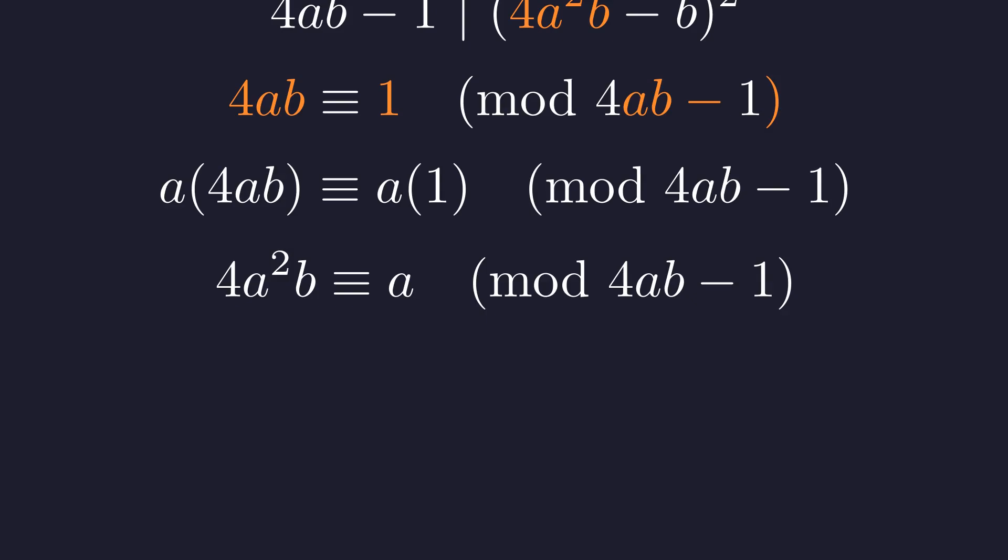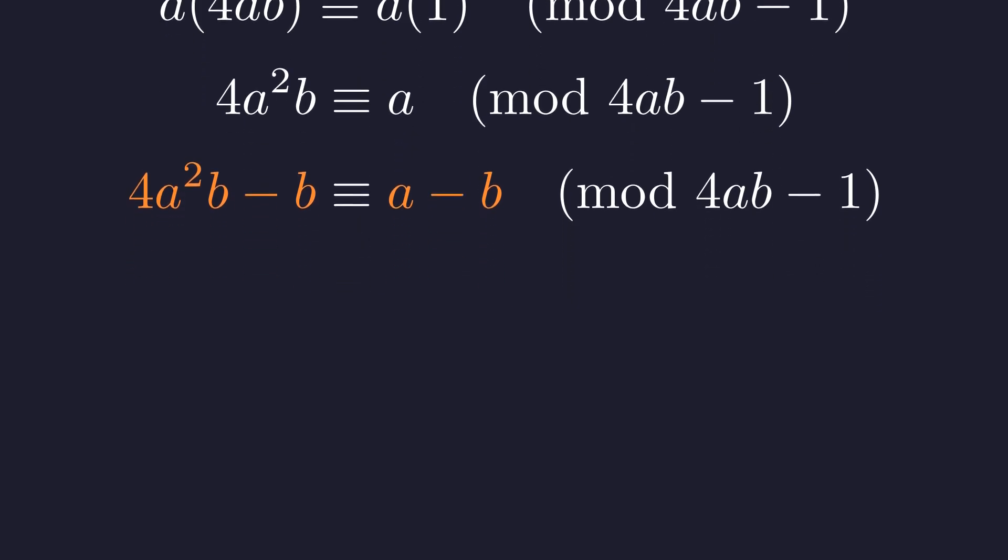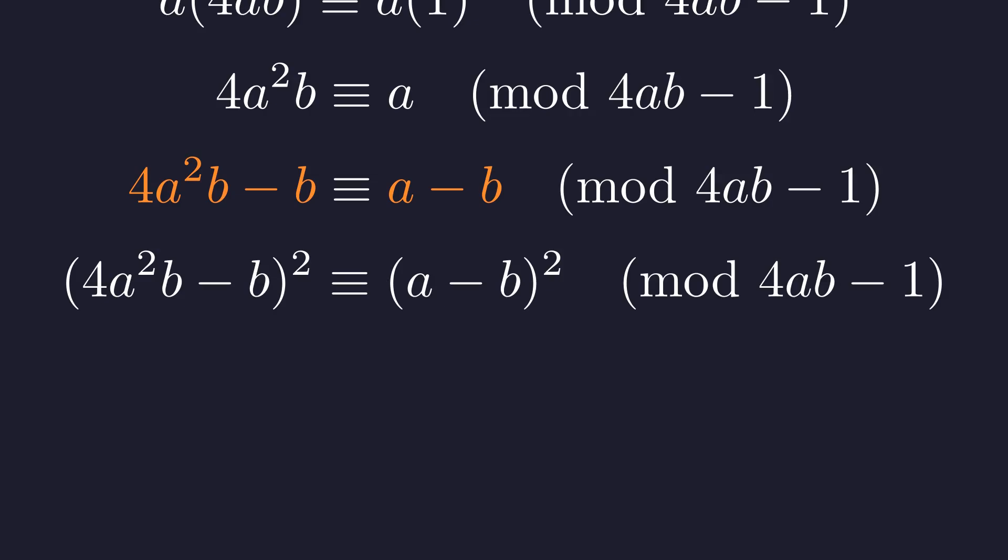We can now substitute this result. Returning to our divisibility statement, the term 4 times A squared times B can be replaced by A under our current modulus. The substitution reveals a structural elegance. The complex expression reduces to A minus B. This transformation is crucial. To connect it back to our divisibility condition, which involves a square, we must now square both sides of this congruence.